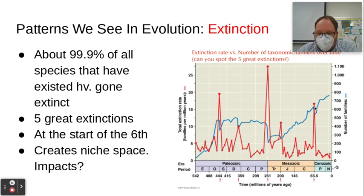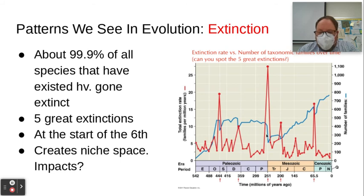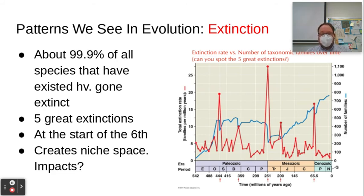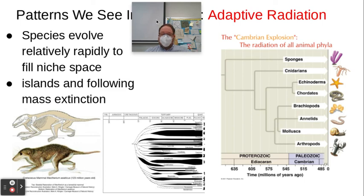The most recent mass extinction was when the dinosaurs were killed off about 65 million years ago. And the startling thing is we are now entering a sixth extinction event. With climate change, habitat fragmentation, and habitat loss due to human activity, we've entered this period of rapid extinction. We're living through another mass extinction. Following periods of mass extinction, if a lot of organisms die off, that creates niche space — opportunity for other populations to evolve and fill that niche space, take those resources and use them. This leads to what's called adaptive radiation.